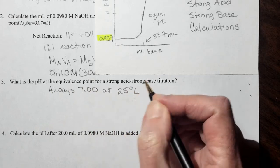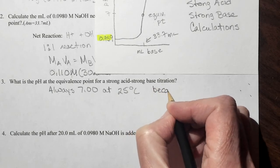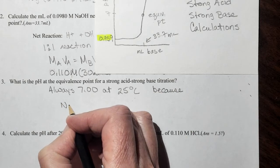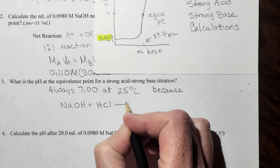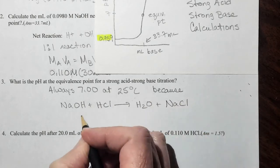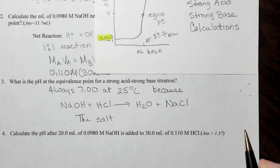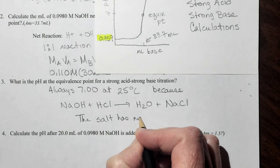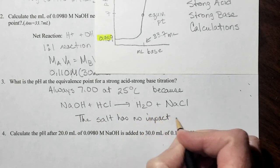Now remember, we do need to be at 25 degrees Celsius. And that is because NaOH plus HCl is going to make H2O plus NaCl. And the salt has no impact on pH because both of them are conjugates of either a strong base or a strong acid.